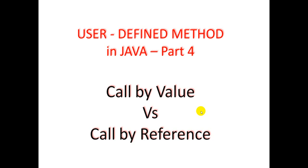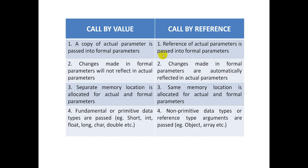Hello students, welcome to part 4 of user defined method in Java. Today we will discuss about the difference between call by value and call by reference. For this you should know parameter passing, actual parameter and formal parameter. So without further delay, let us see the difference between call by value and call by reference. First we will understand the points, and after that we will see an example of each.